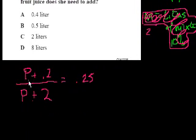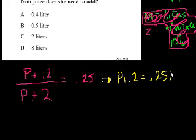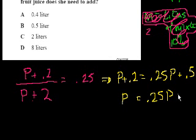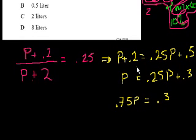The hard part is setting up the problem. So let's multiply P plus 2 times both sides. So you get P plus 0.2 equals 0.25 times this, so 0.25P plus 0.25 times 2 is 0.5. Fair enough. Let's subtract 0.2 from both sides. You get P equals 0.25P. 0.5 minus 0.2 is plus 0.3. Let's subtract 0.25P from both sides. 1P minus 0.25P is 0.75P equals 0.3. And let's see where this goes. Did I do that right? 0.75P equals 0.3.